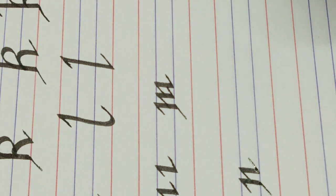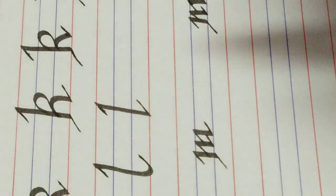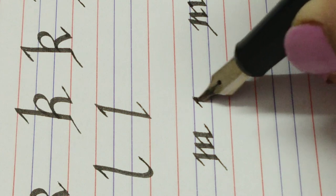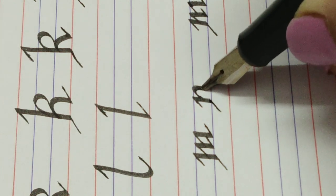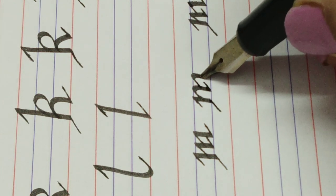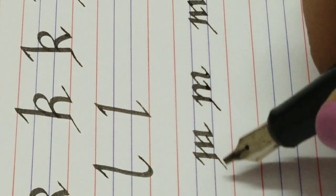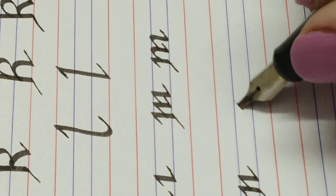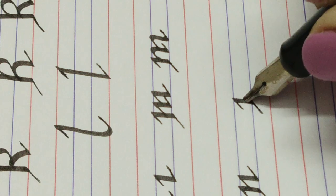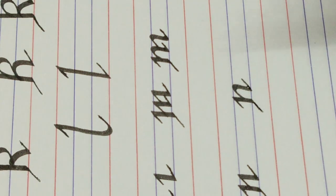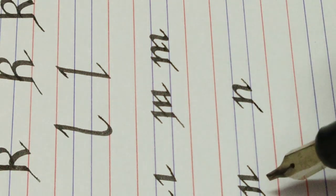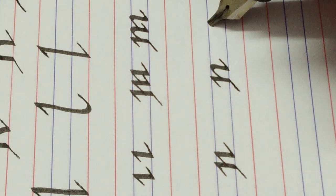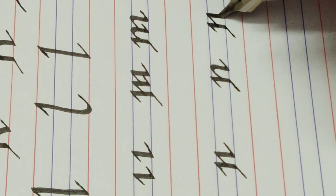N is just half of M, it goes like this. One variation which I would like to tell you for M and N would be this: if you're making an M, you can try this as well, you can do it little curvy. So this is one type and this is one type. You can do variation according to your writing and the one which you prefer. There are two types of M and two types of N, but generally we prefer this one.